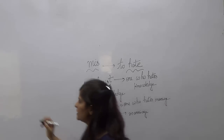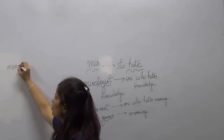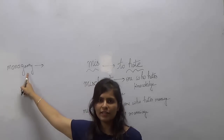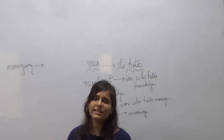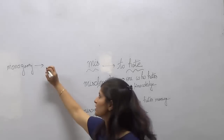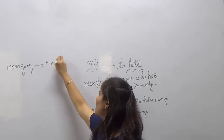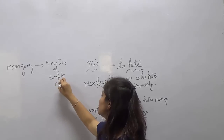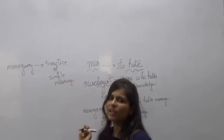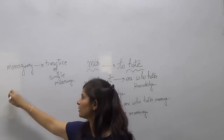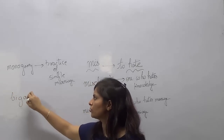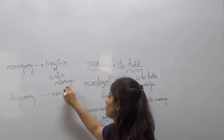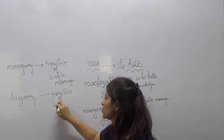Moving on, if I write 'monogamy' — 'gamy' means marriage, and 'mono' means one or single. So monogamy becomes the practice of a single marriage. Now, 'bigamy': 'bi' means two, and 'gamy' is marriage. So bigamy is the practice of two marriages.